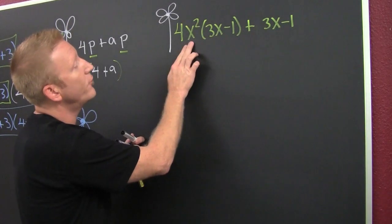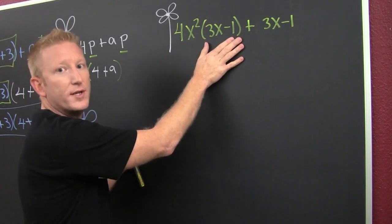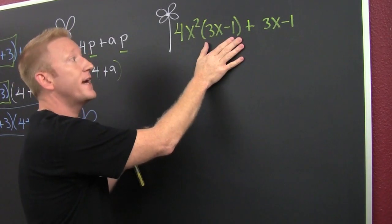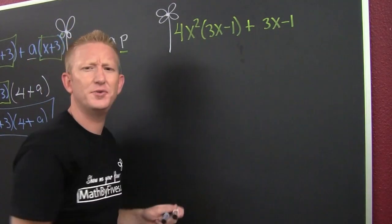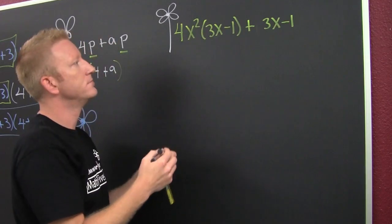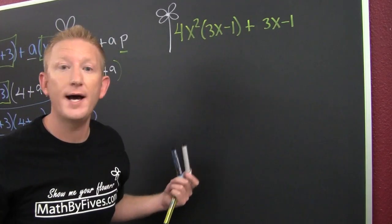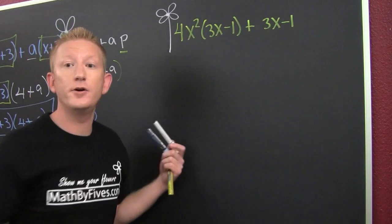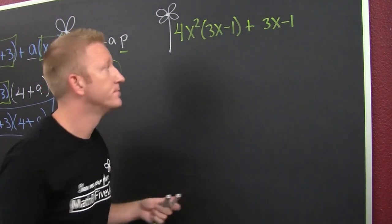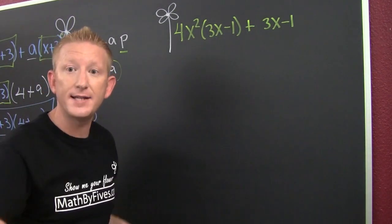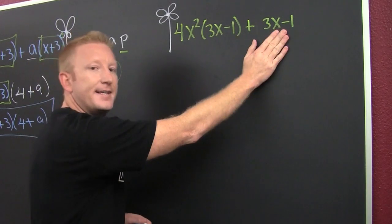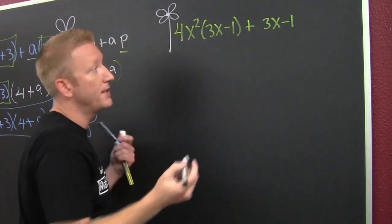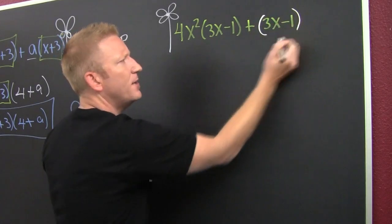Here what do we have? We have 4x² times this quantity that's 3x minus 1, and over here we see 3x minus 1 too. But what are you gonna do? Do we have a common factor? I want to make it look like that last one. Here we see we have that 3x minus 1 and that 3x minus 1. That's fun, that could be our common factor. What can I pull out of here?